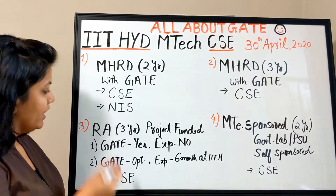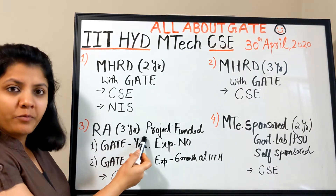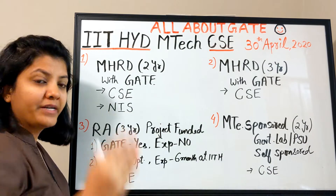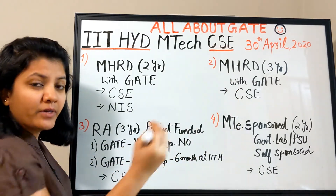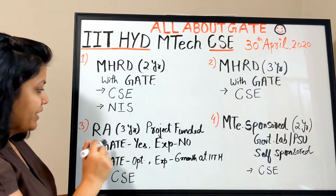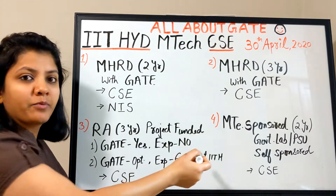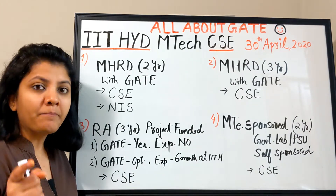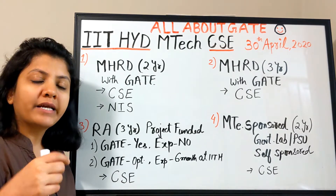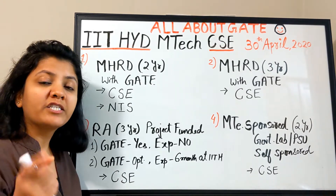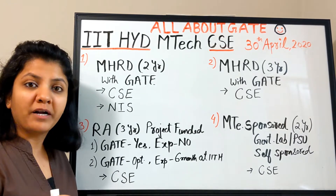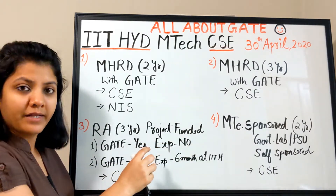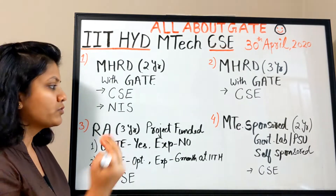The third category is RA three-year program — again an MTech three-year program, but different from the MHRD one. This is a research assistantship project-funded program, similar to IIT Bombay's MTech RA, where you get enrolled and are also assigned to a specific sponsored project running under the department. Your stipend comes through that project.